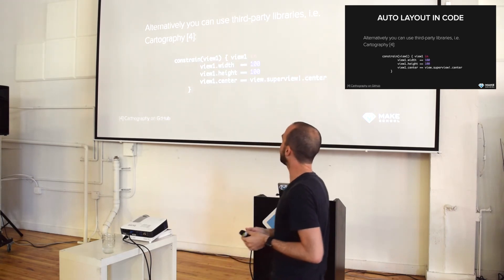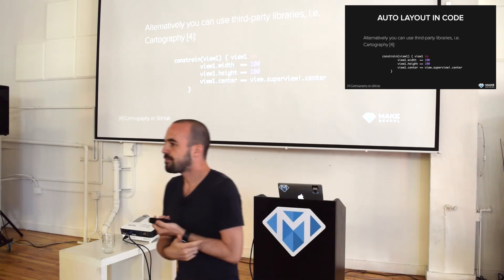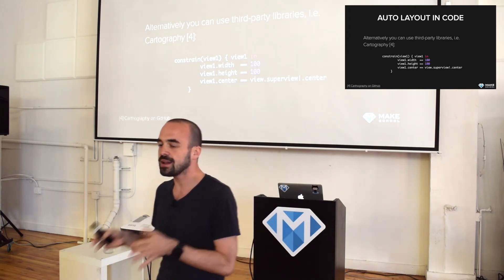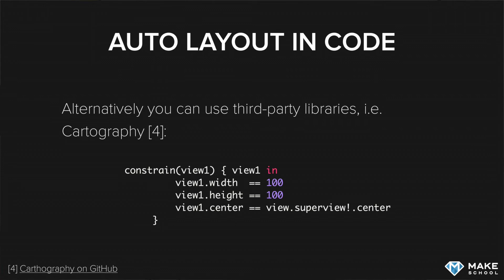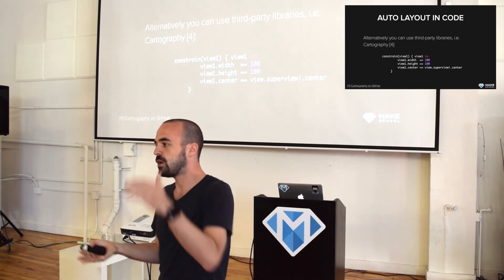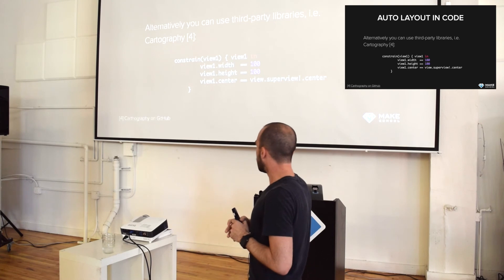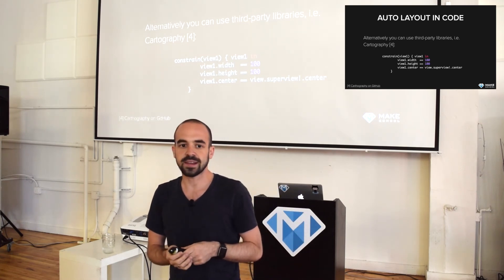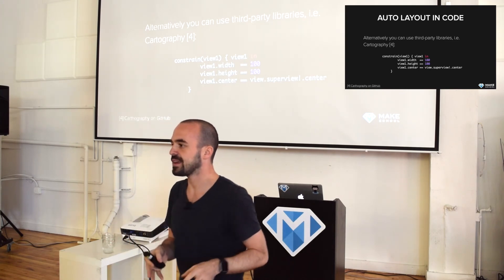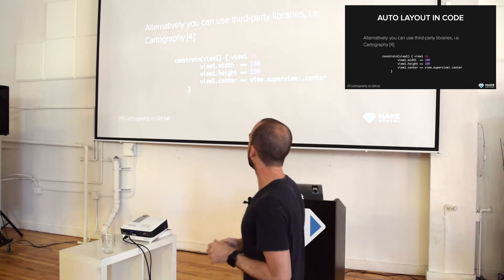A better alternative in my personal opinion is using third-party libraries. There are like five or six different libraries that make it easier to write auto layout code. One example is Cartography, which I like quite a lot. A short example: to constrain the width and height of a view to 100 and center it in the parent view, you can do that in three lines of code. You can say view1.center == view.superview!.center, and that basically establishes a constraint between the view and its parent view, instead of having a line of code with eight arguments. There are a ton out there — try them out and see which ones you like most. It's mostly recommended to use one of these libraries instead of the native API because it leads to very long, unreadable code.